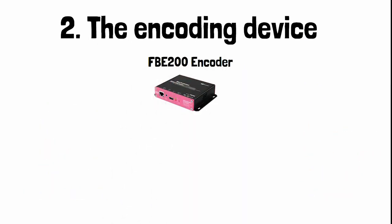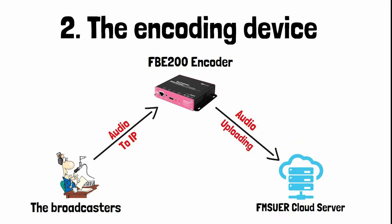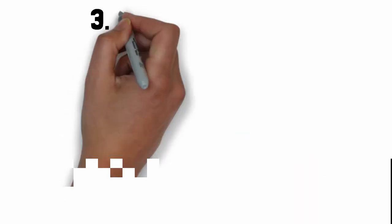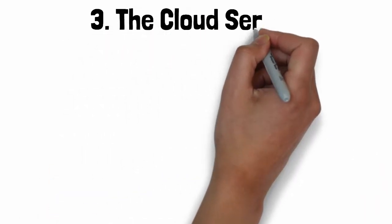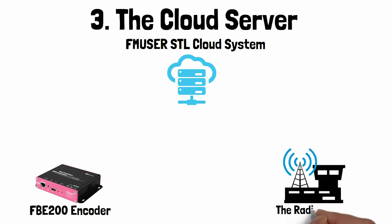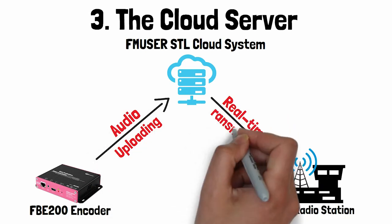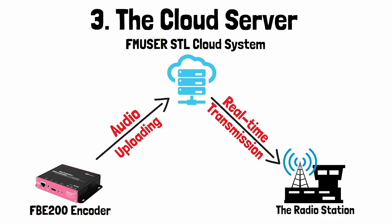Secondly, the encoding device. The audio signals delivered by the broadcasters will be transferred into IP signals via the FB200 encoder and then uploaded to the FM User cloud server. Thirdly, the cloud server. The audio signals uploaded by the FB200 encoder will be transferred for real-time transmission to the station.